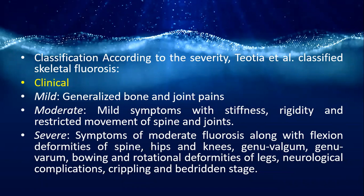Tootia's clinical classification of skeletal fluorosis has three stages: mild — generalized bone and joint pains; moderate — stiffness, rigidity, and restricted movement of spine and joints; severe — symptoms of moderate fluorosis along with flexion deformities of spine, hips and knees, genu valgum, genu varum, rotational deformities of leg, and neurological complications.